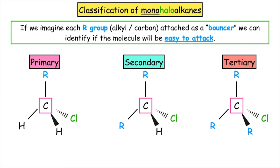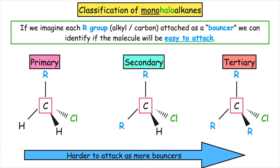If we look at a primary, it's only got one R group, so one bouncer. Secondary has got two R groups, so two bouncers, and the tertiary has three R groups and three bouncers. Now if you were to be protected, would you prefer to have one bouncer or three bouncers surrounding you? This tells us that the more bouncers you have — the more R groups or alkyl groups surrounding the carbon centre which contains the halogen — makes it more difficult to attack.